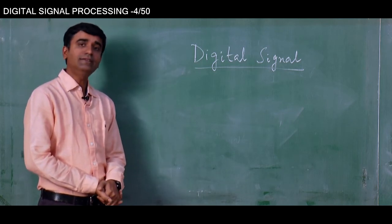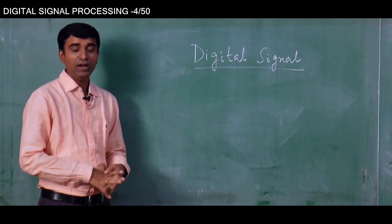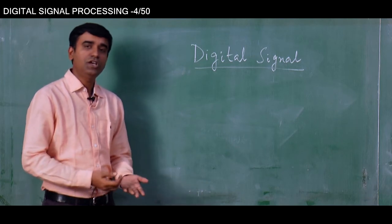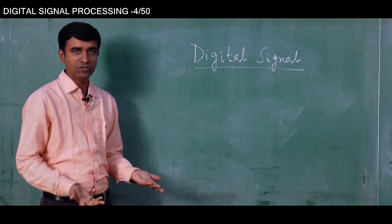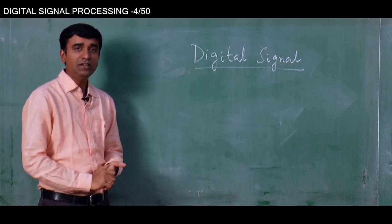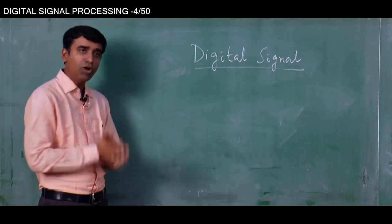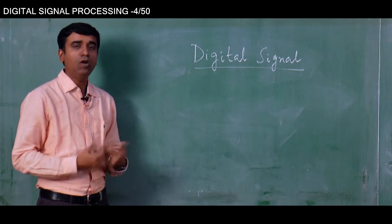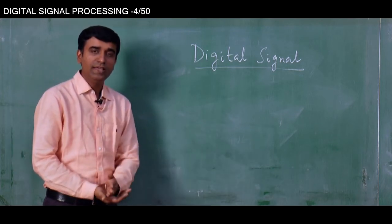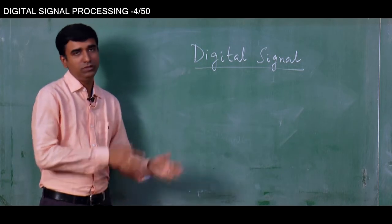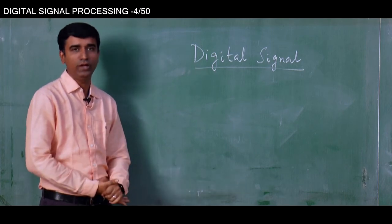We have already discussed that analog signals are continuous time signals — they are the ones readily available in nature, they are the original ones. Digital signals are not the original signals; they are signals derived from analog signals for our convenience, the reasons being less requirement of power, reduction of size of electronic devices, and less prone to error.